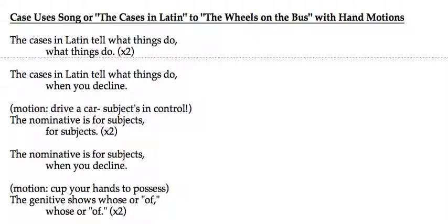The nominative is for subjects, for subjects, for subjects. The nominative is for subjects when you decline.